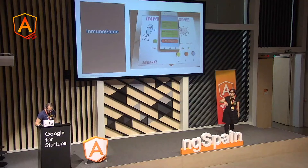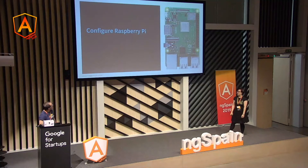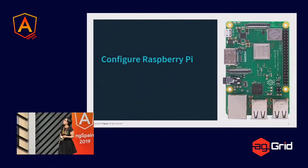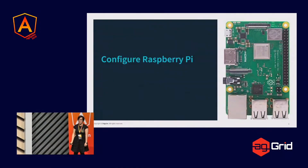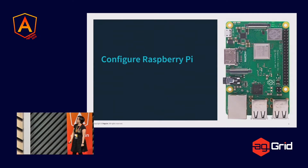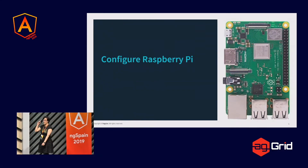We can show you later. We have here the Immuno game. If someone wants to interact with us, we can show you. And what we do is I am going to explain the steps that we followed this summer. First of all, we bought the Raspberry Pi. We have the 3B version, but now there is a Raspberry 4 version that is really great. If you want to start doing something with it, buy the 4 version. It's really good.